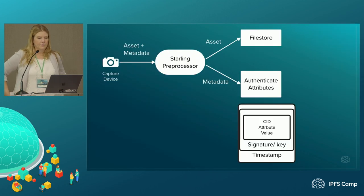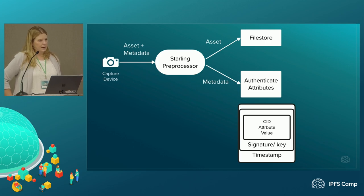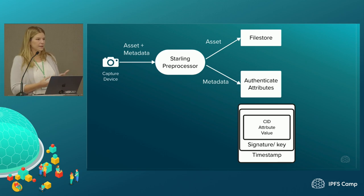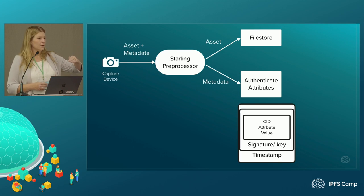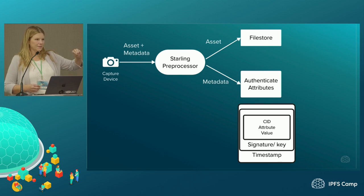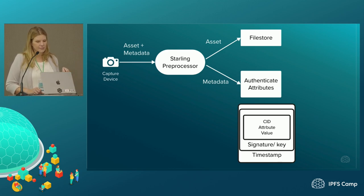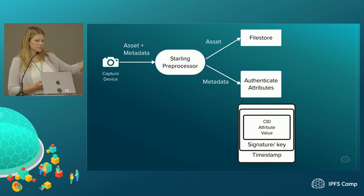So let's look at the architecture of how we handle this. We'll get an asset and metadata from a capture device and it goes into the Starling Lab preprocessor. We actually separate this apart. The authenticated attributes database is right now publicly accessible, but we don't want a photograph that we don't want shared with the world to be exposed, so we separate the asset into a file store. But all the metadata about it — the content identifier of the photograph and all the attributes, which are timestamped and signed — go into the authenticated attributes database. So you can see that we get a CID, an attribute could be 'location' and the value 'Brussels, Belgium,' and we add a signature and a timestamp to it.